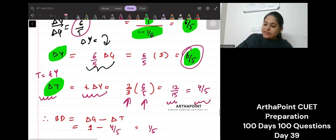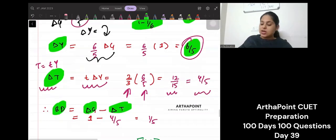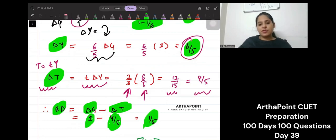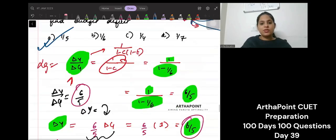Now, budget deficit is change in government expenditure minus change in taxes. Government expenditure changed by 1. Tax changed by 4 by 5. So budget deficit increased by 1 by 5. So the answer to this question will be 1 by 5.